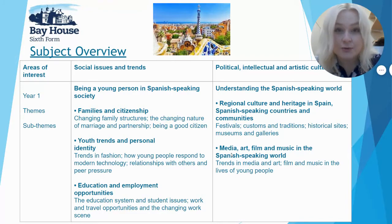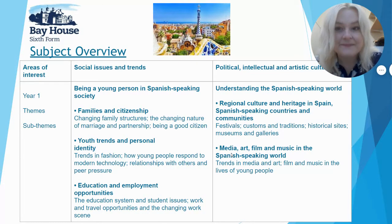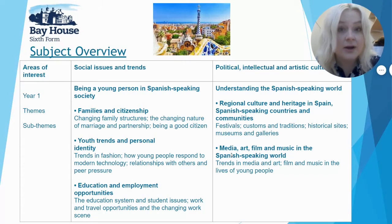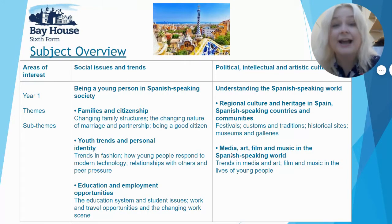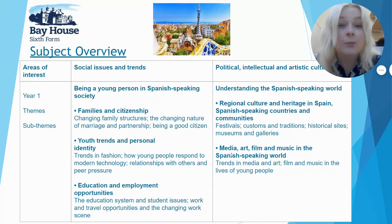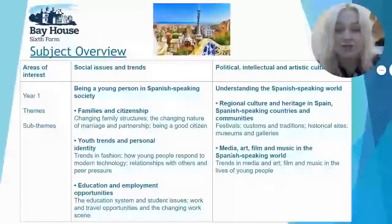A-Level Spanish is divided into two years. In the first year, we look at two areas of interest. The first is social issues and trends, which covers things like being a young person in Spanish and Hispanic society, family, citizenship, education, employment, and how this is changing in contemporary Spanish life. We also look at political, intellectual, and artistic culture.